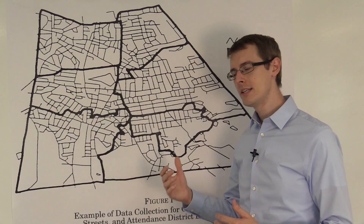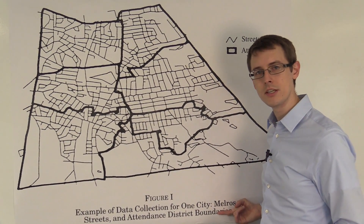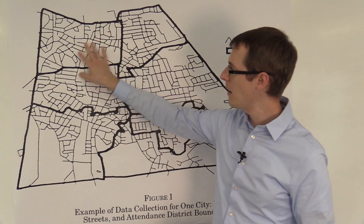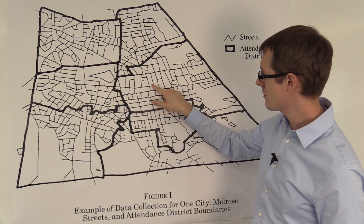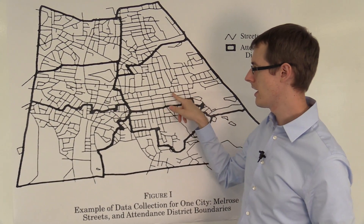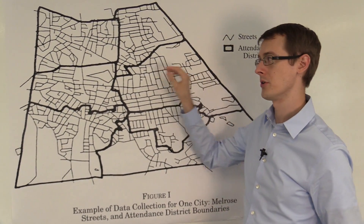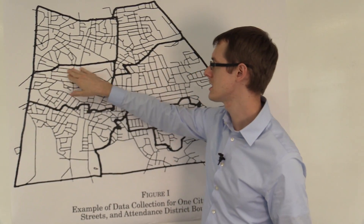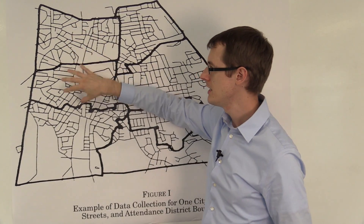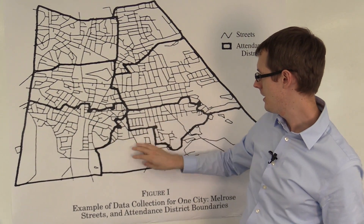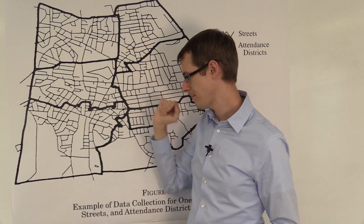She took cities like Melrose in Massachusetts near Boston. This is a map of the city. You can see streets on these lines, and then attendance district borders drawn in solid lines. So this is one school zone, and these other areas here are all different school zones.